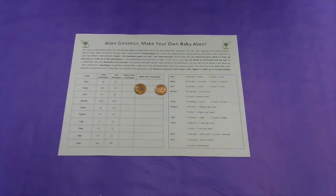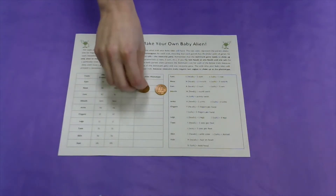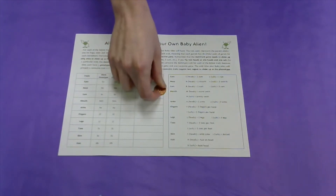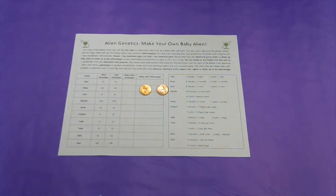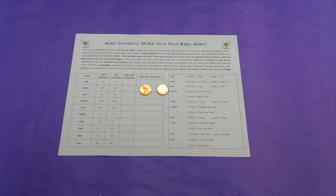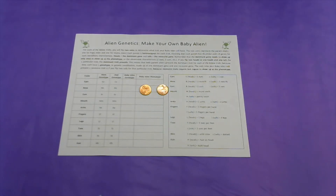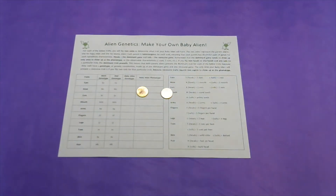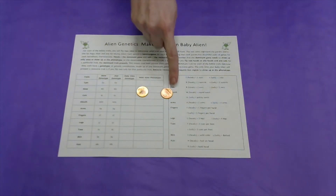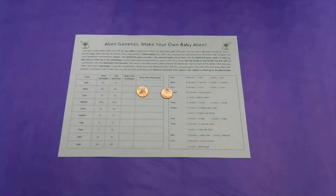Remember that the dominant gene needs to show up only once to show up as the phenotype, or the observable characteristic. If you flip two heads or one heads and one tails for a particular trait, the dominant trait prevails. Both parent aliens present the dominant trait because they each have a genotype made up of one dominant gene and one recessive gene. The only time your baby alien will present a recessive trait is if you flip two tails, because recessive traits require two copies to show up as the phenotype.